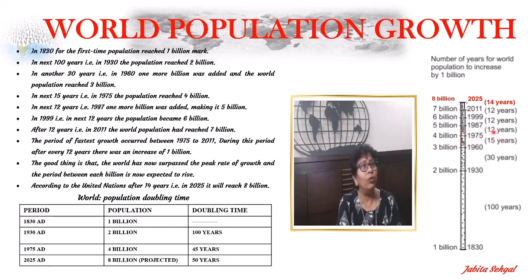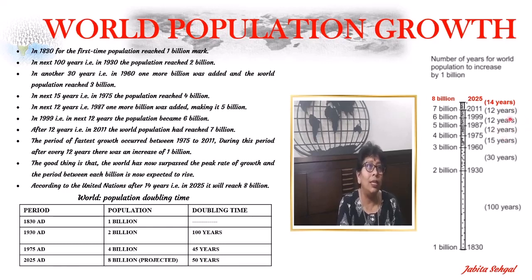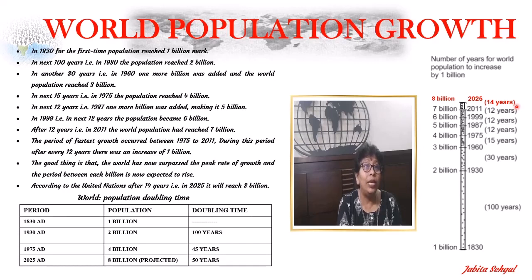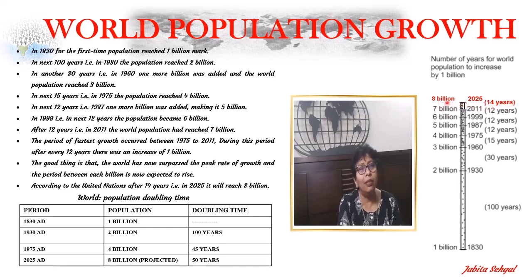The period of fastest growth occurred between 1975 and 2011. During this period, after every 12 years, there was an increase of 1 billion. The good thing is that the world has now surpassed the peak rate of growth, and the period between each billion is now expected to rise. According to the United Nations, it is estimated to take approximately 14 years to reach 8 billion in the year 2025.